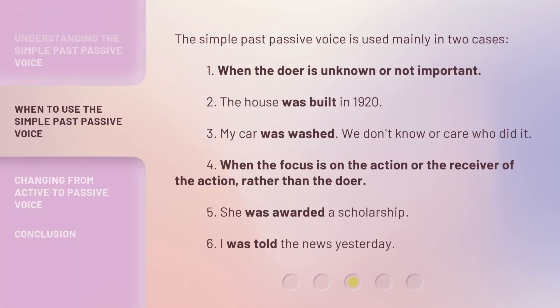The simple past passive voice is used mainly in two cases. First, when the doer is unknown or not important — for example, 'The house was built in 1920' or 'My car was washed' — we don't know or care who did it. Second, when the focus is on the action or the receiver of the action rather than the doer — for example, 'She was awarded a scholarship' or 'I was told the news yesterday.'